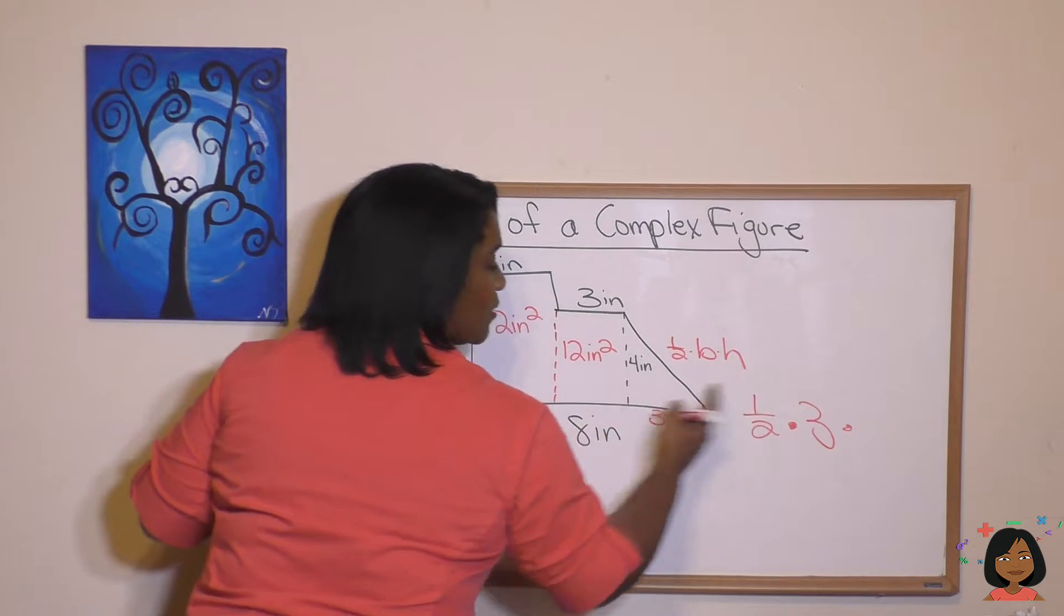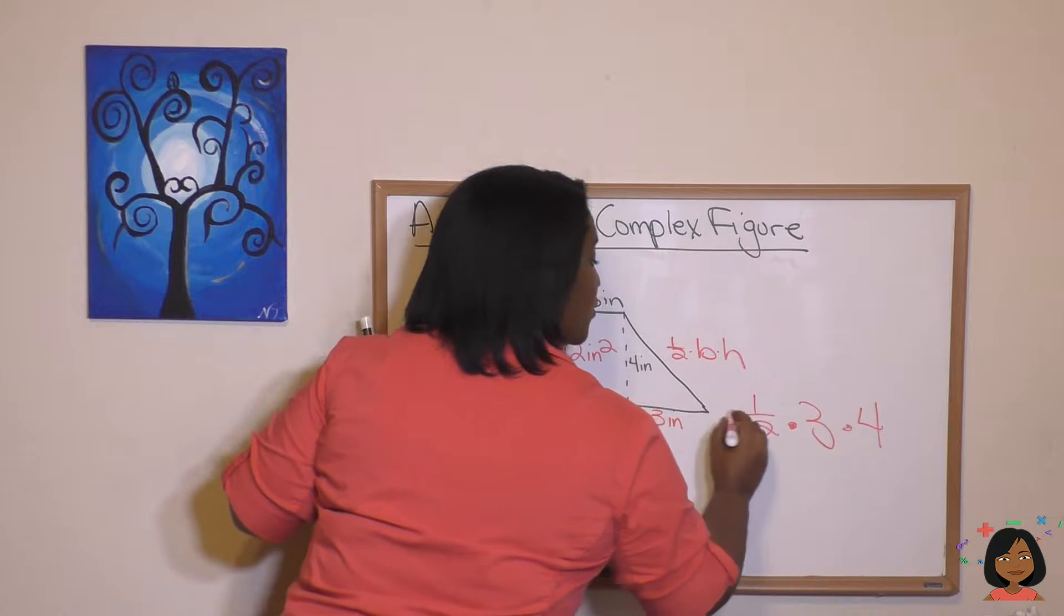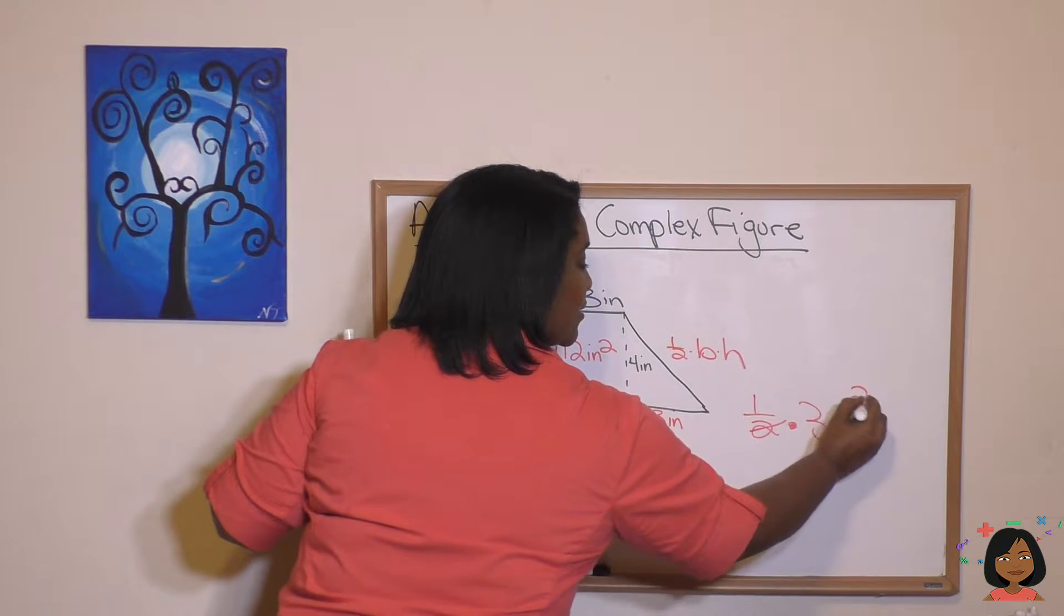So that's our base. And what's our height? Our height happens to be drawn in right there. It's four inches. So one half base times height, I can do some canceling.